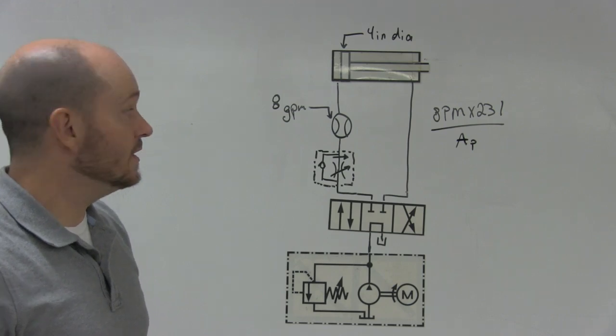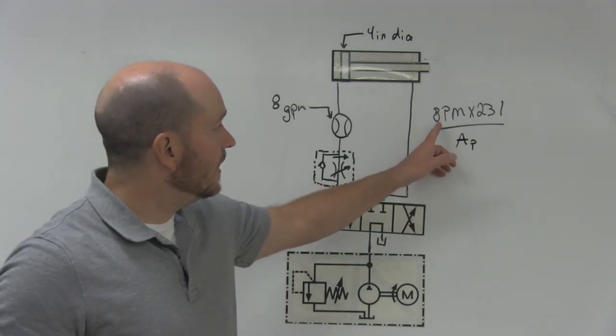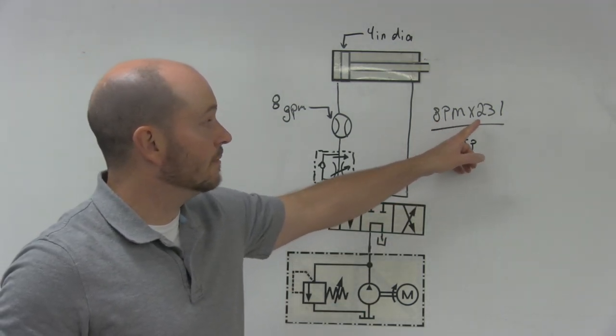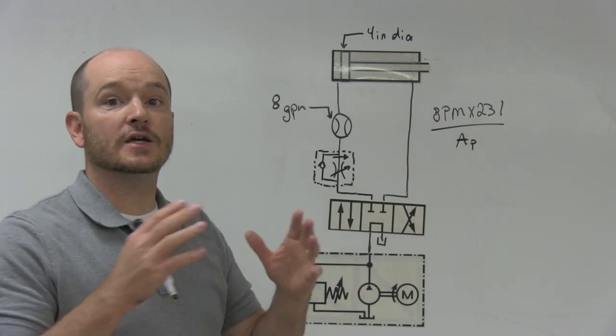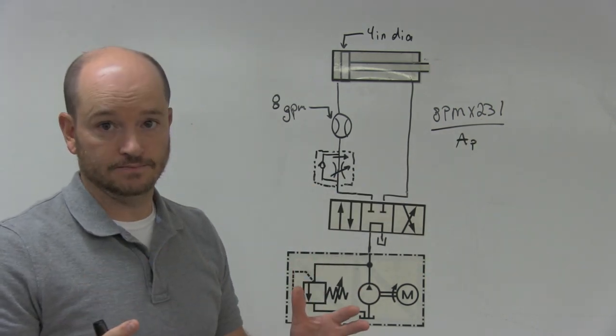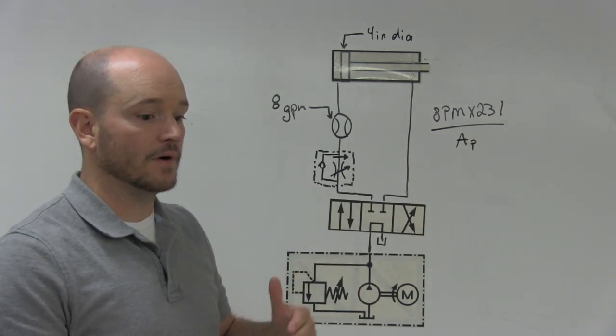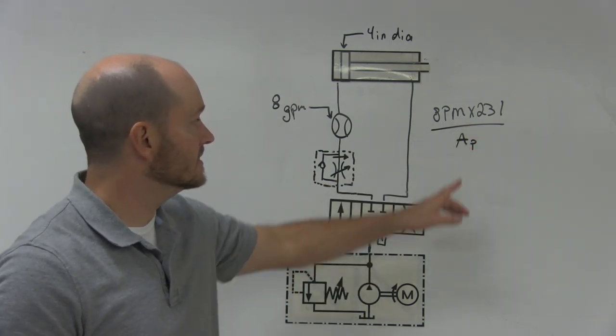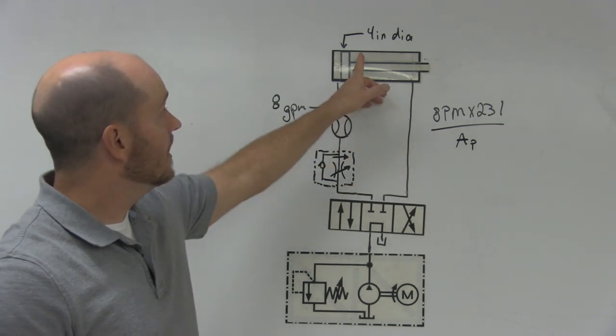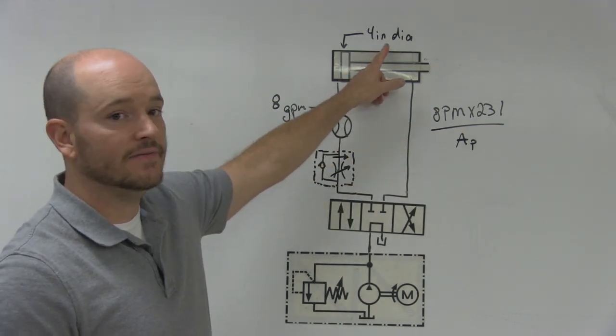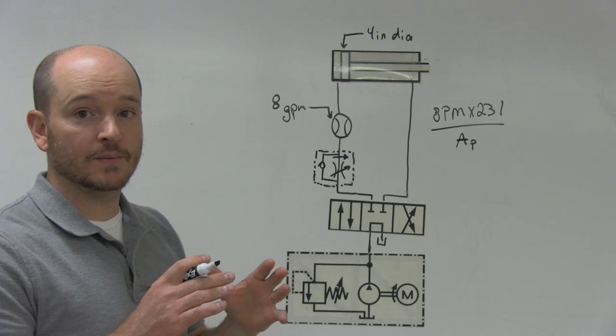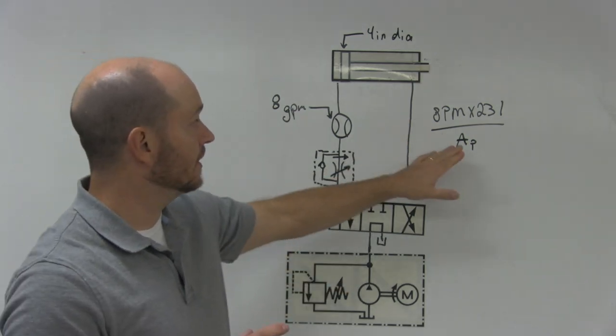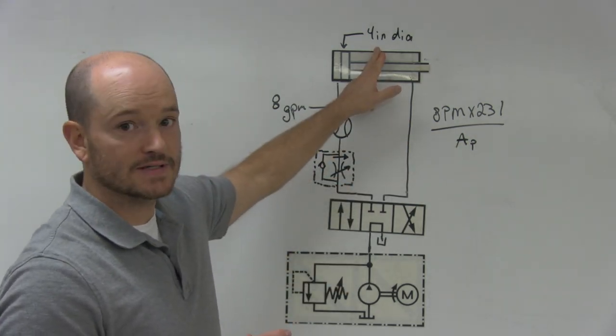Now when you look at this, the point of taking gallons per minute multiplied by 231 is to convert that back to volume. So we're going back from capacity to volume. And that's what this formula does. And then our area of our piston is given here, but it's given in diameter. So the first thing we would have to do, before I start to plug everything in, is to convert this to area.